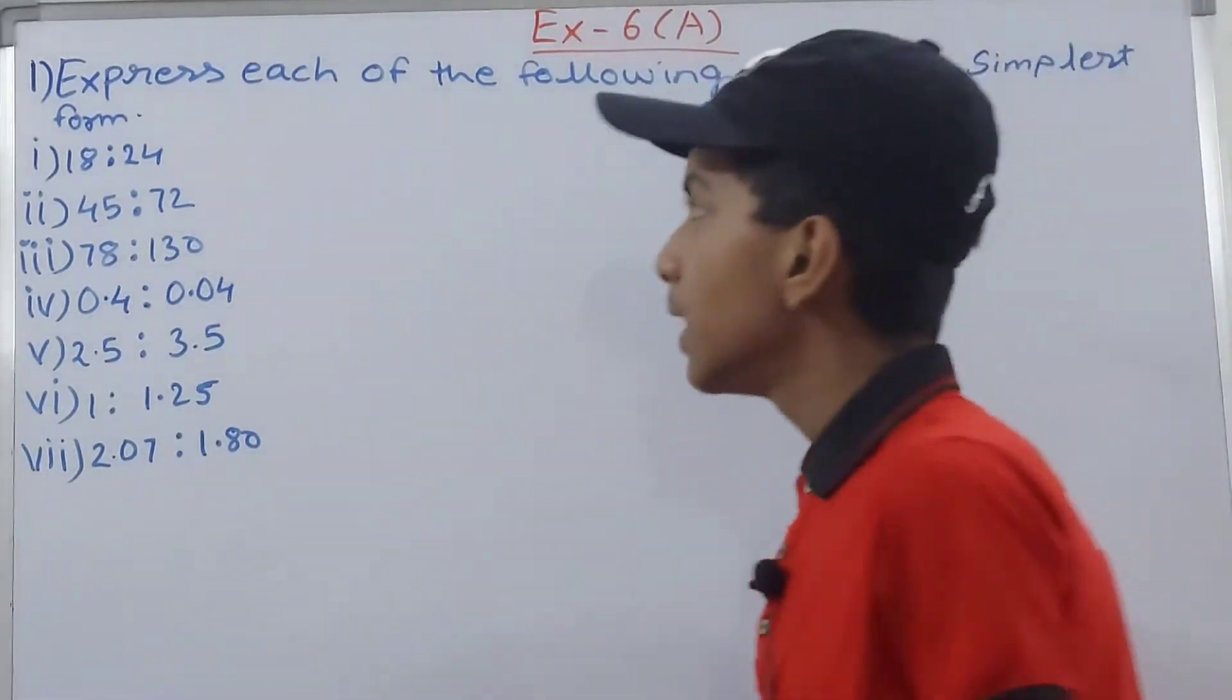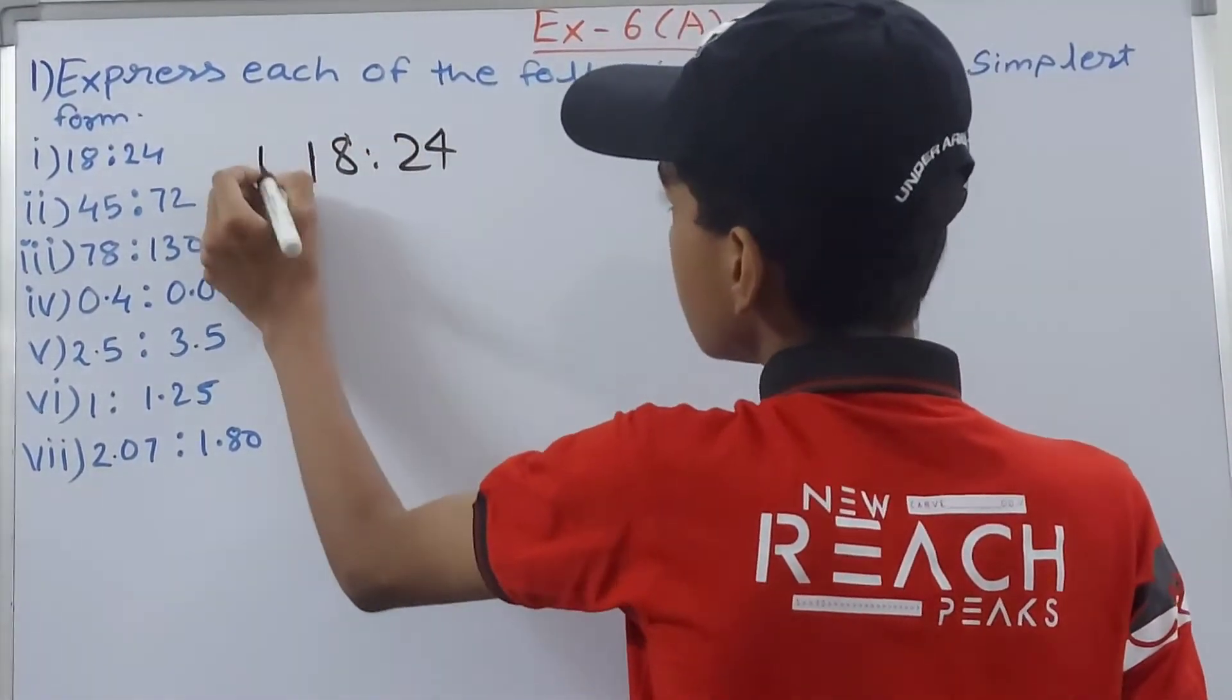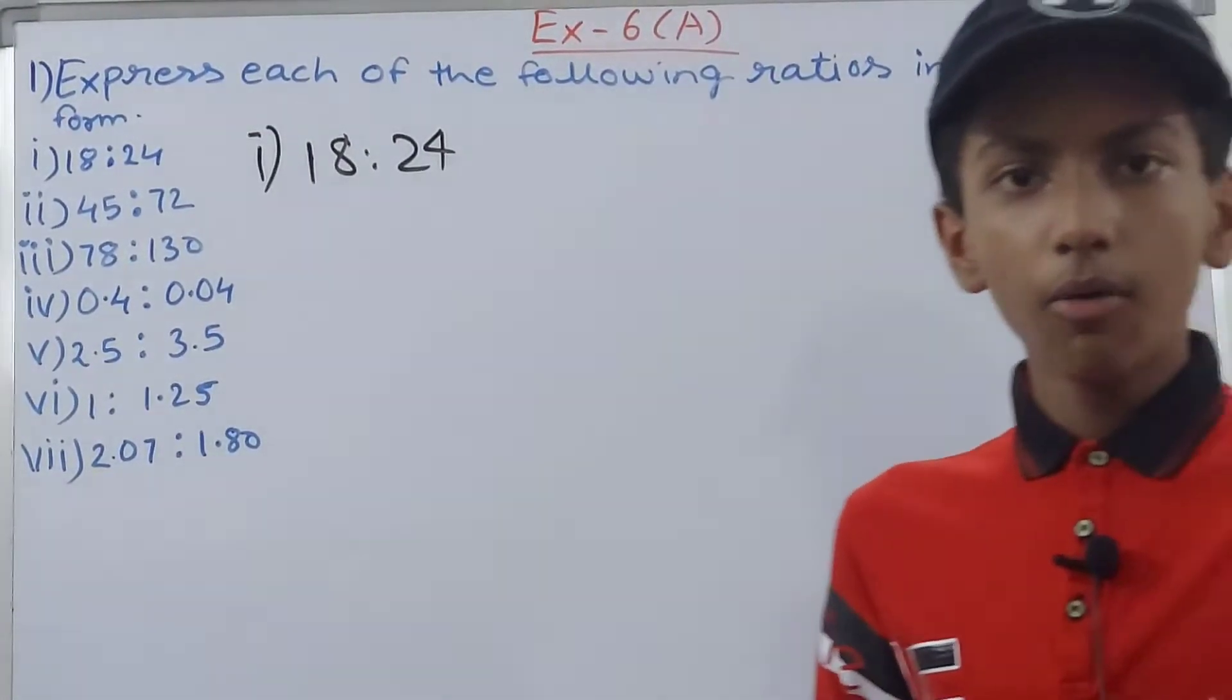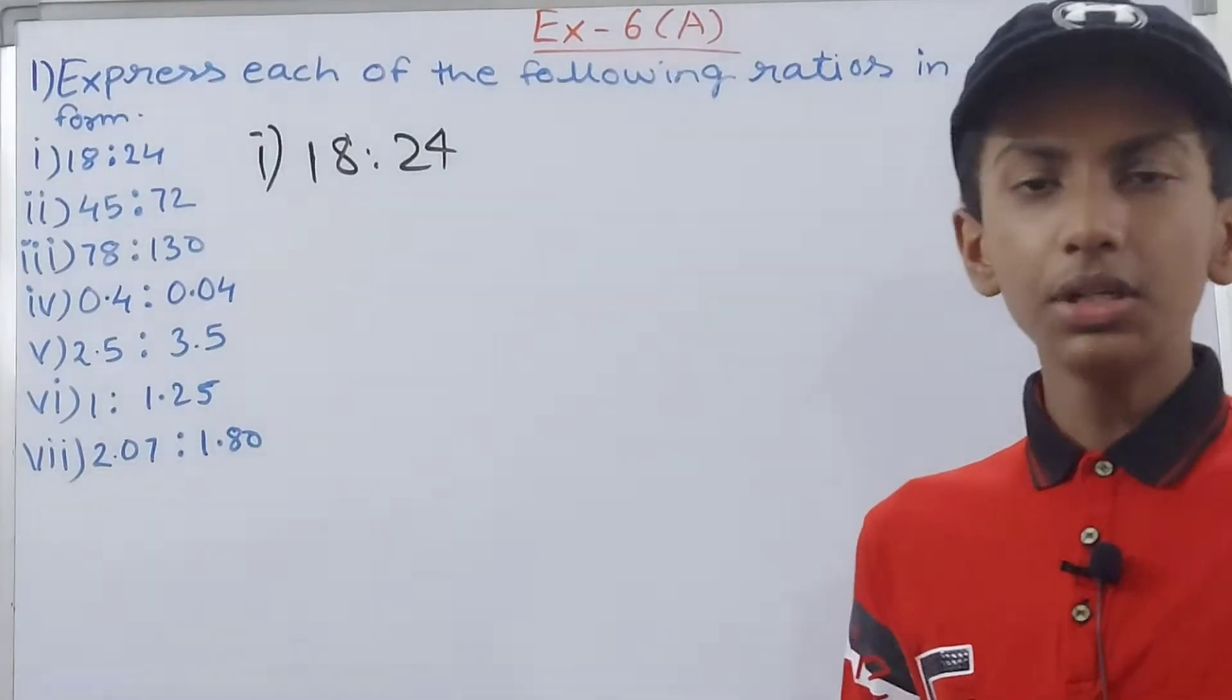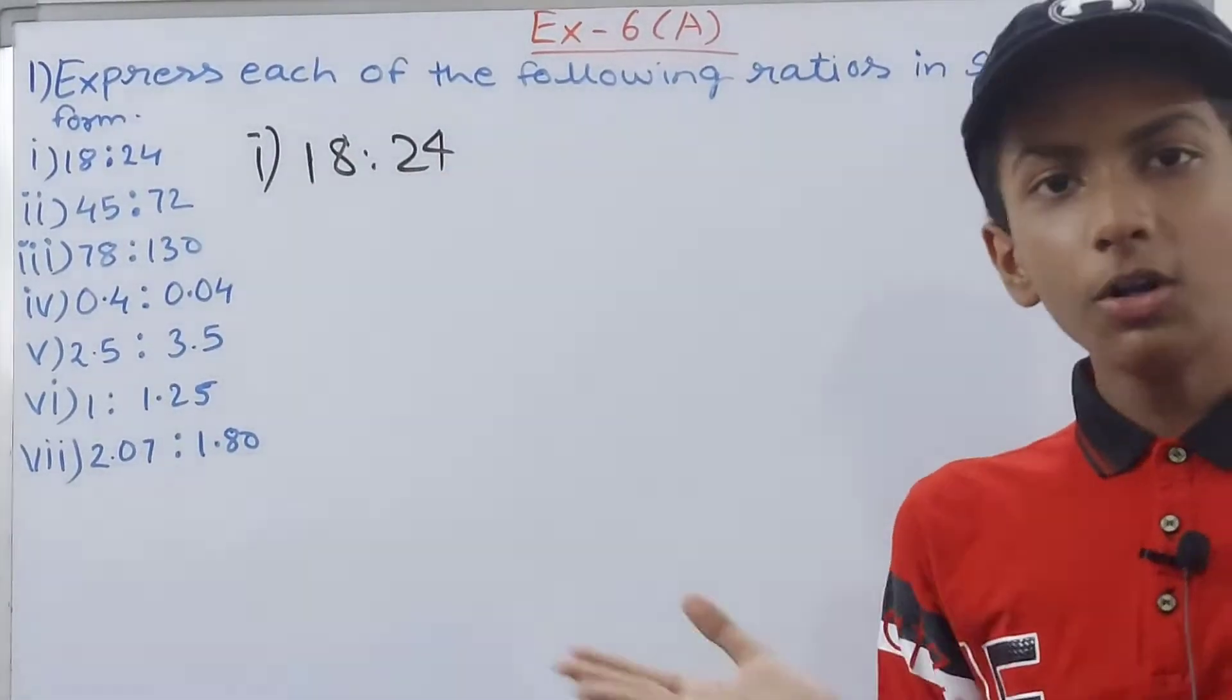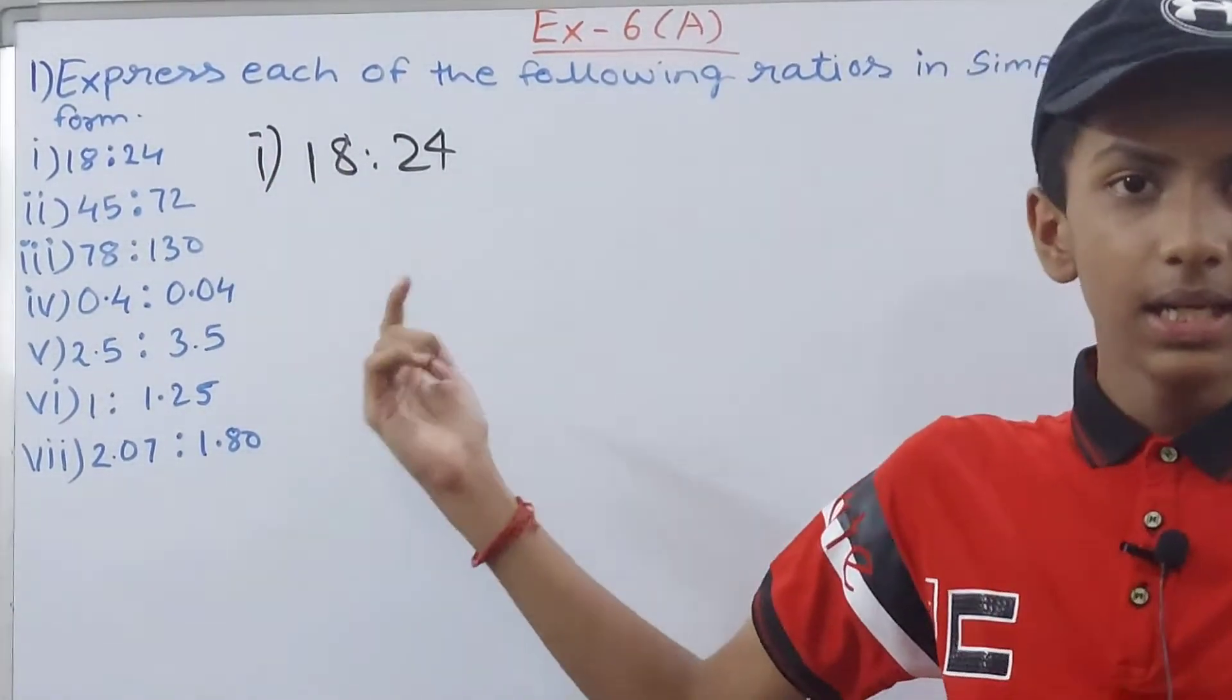Here we have the first one: 18 is to 24 in our first part. And this 18 is to 24 is a ratio. So in this ratio you can see first we have 18 and then we have 24, so order is very important. If we write this as 24 is to 18, that will be completely wrong. Ratios always have an order in them.